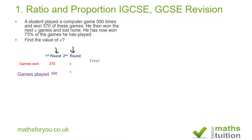For the totals, the number of games won is 370 plus X, and the total number of games played is 500 plus X. We are told that the fraction (370 + X) divided by (500 + X) is equivalent to 75%, which we can write as 0.75.